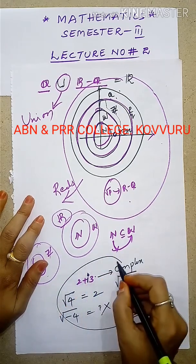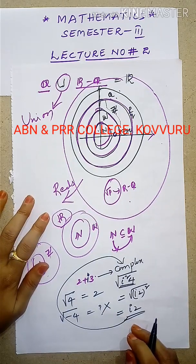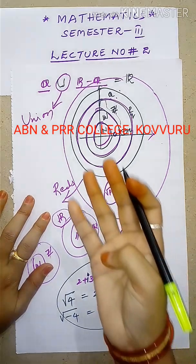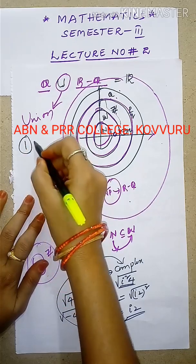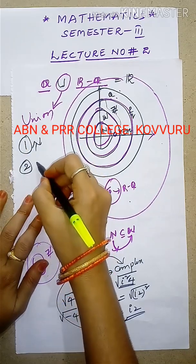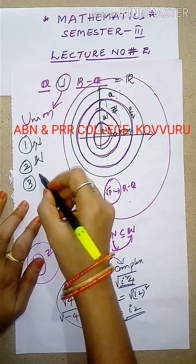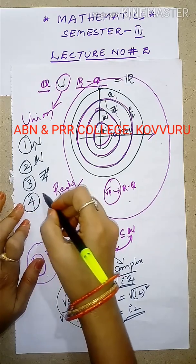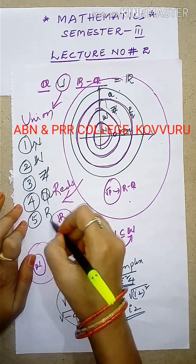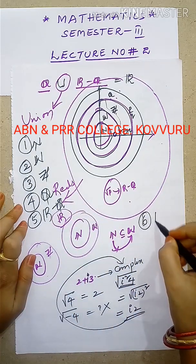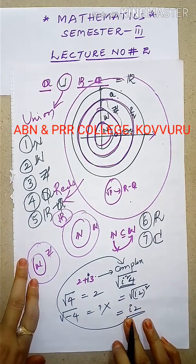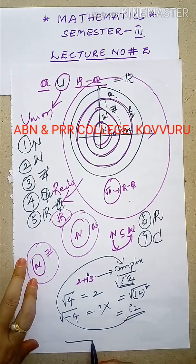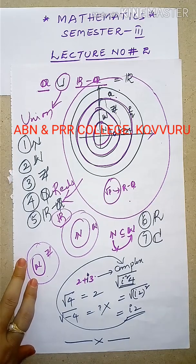So the set of complex numbers is the final one. We learned today that there are 7 number systems: 1) natural numbers, 2) whole numbers, 3) integers, 4) rationals, 5) irrationals, 6) reals, and 7) complex numbers. We use capital letters as indicators for each set. I hope you have some idea about the number system. Thank you.